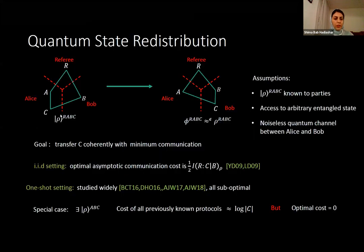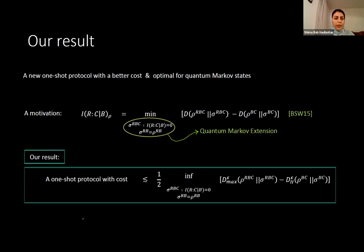In the task of Quantum State Distribution, there is a pure state rho_RABC where registers A and C are with Alice, register B is with Bob, and register R is the reference. Alice and Bob want to transfer C coherently to Bob using a noiseless quantum channel and some shared entangled states.